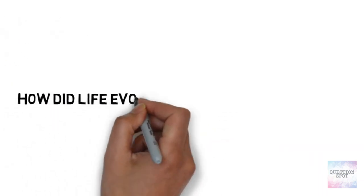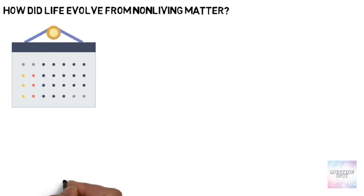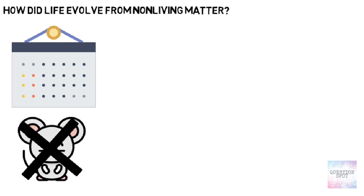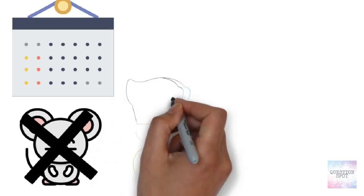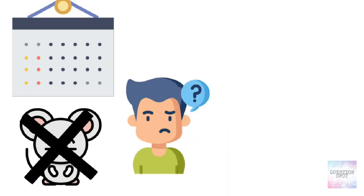5. How did life evolve from non-living matter? For its first half billion years, Earth was lifeless. Then life took hold, and it has thrived ever since. But how did life arise?